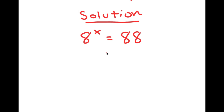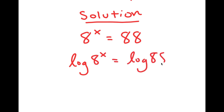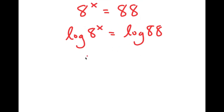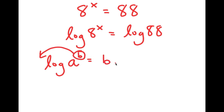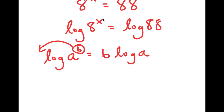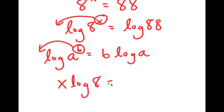I'm first going to start by taking the log on both sides, so I get log of 8 to the power of x is equal to log of 88. Now, if I have something in the form log of a to the power of b, I can move this exponent b to the front, so it equals b times log a. In this case, I have log 8 to the power of x, and I can move x to the front, so I get x times log 8 is equal to log 88.